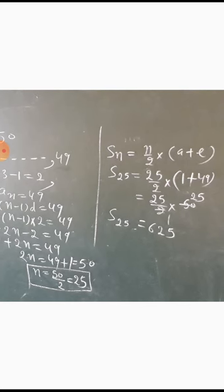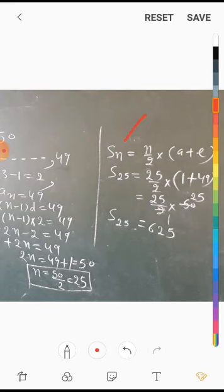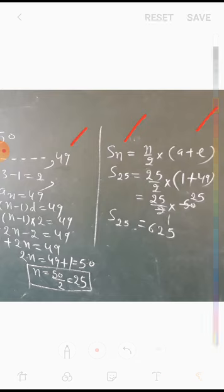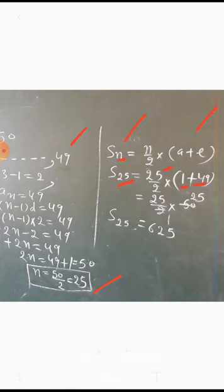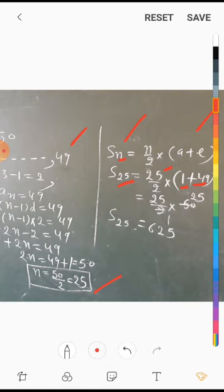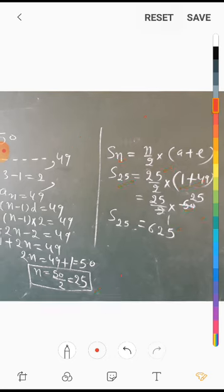Now to find the sum, we use the formula S_n = n/2 × (a + l), where last term l = 49 and n = 25. So S_25 = 25/2 × (1 + 49) = 25/2 × 50 = 25 × 25 = 625. This is the answer.